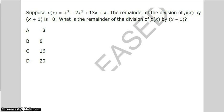This is number two, question number two from the 2013 Math 3 released test for North Carolina. We have x to the third minus 2x squared plus 13x plus k, and that's what we're trying to figure out is what is k.